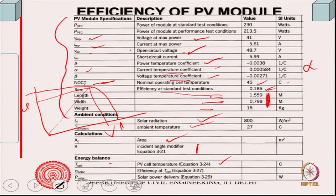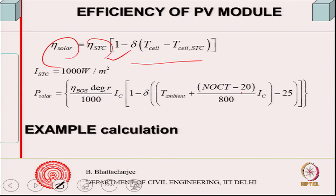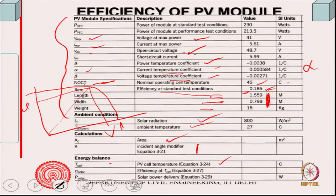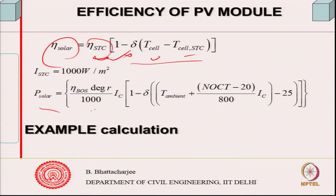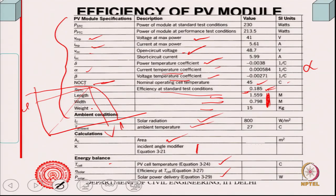Efficiency can be calculated from the formula since efficiency at standard condition is already given as 0.185. Delta is known, T_cell has been found, and T_cell under standard condition is also given. So solar power P can be calculated based on this formula — for example, for 1000 W/m² standard condition. That is how one can calculate the power output.